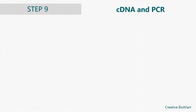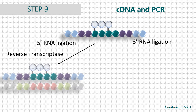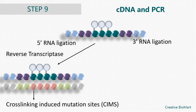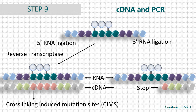Step 9, cDNA and PCR. Spin, wash, and dry RNA as above. Count the RNA again in a scintillation counter to quantitate yield. Resuspend the purified RNA in 9 µL water, and add 2 µL of DP3 primer. Heat at 65°C for 5 minutes. Chill and quick spin. The RNA is reverse transcribed into cDNA, and PCR amplification is performed.